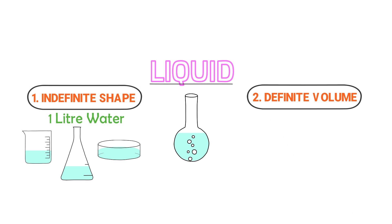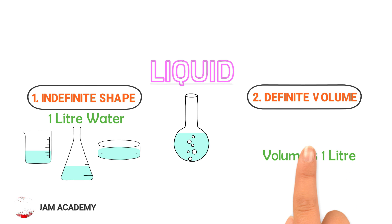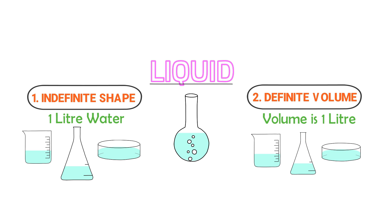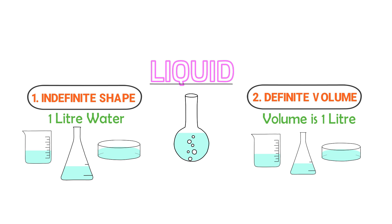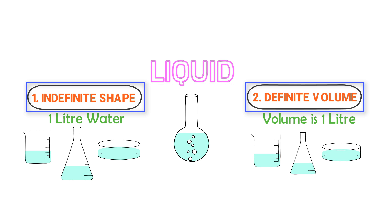Secondly, liquid has definite volume. Although the shape of liquid changes when changing the container, the volume of liquid remains fixed or constant. For example, the volume of water in the beaker is one liter. When you put the liquid in the flask, again its volume is one liter. Similarly, the volume of water in the flat object is also one liter. Therefore, we say that liquids have definite volume and indefinite shape.